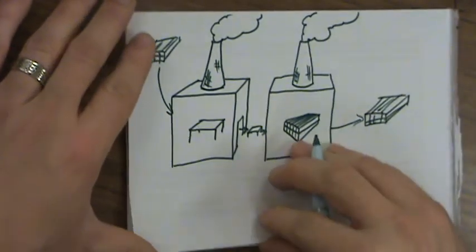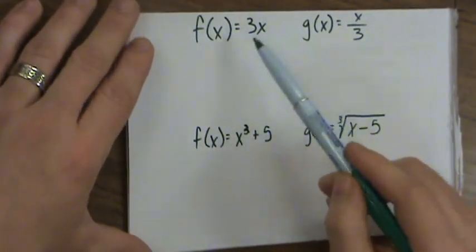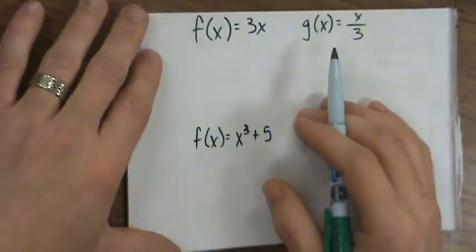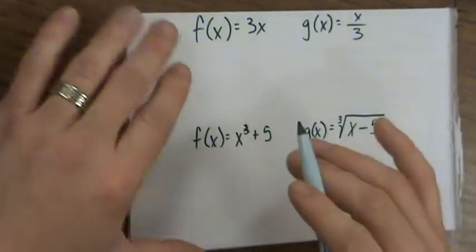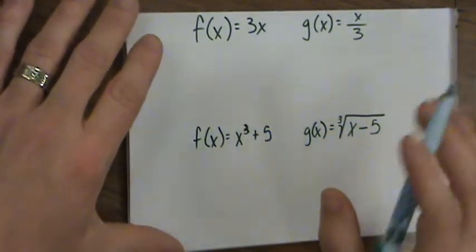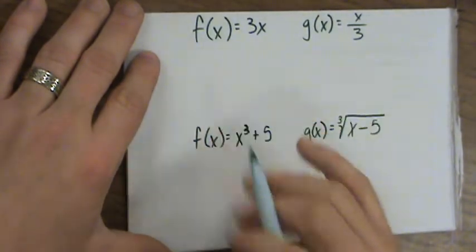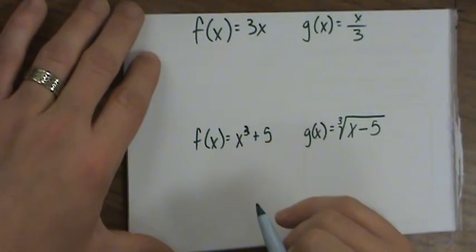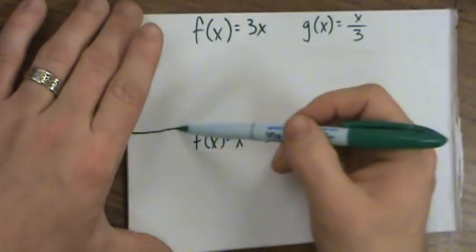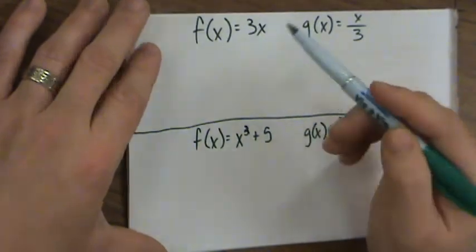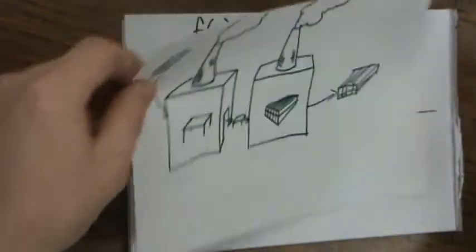An inverse function takes something that comes out of one function and, after passing through the inverse function, produces exactly what was originally put into the first function. The second function undoes all the work done by the first. We use functions like f of x all the time; relations less so. The important thing is recognizing a function as a special kind of relation.